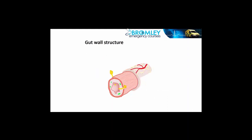Moving out to the next layer, this is what's known as the submucosa. This has elastic fibers in it, which are important in maintaining the shape of the gut after distension from a passing bolus of food. Lying over the outermost surface of this layer is Meissner's plexus. This is largely parasympathetic and provides secretomotor supply to glands, so it's the layer responsible for glandular secretions. It also has some afferent sensory supply from within the gut.